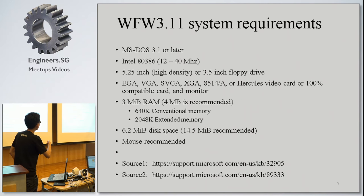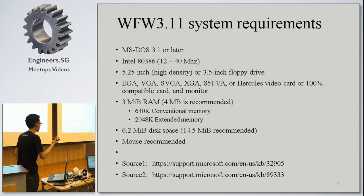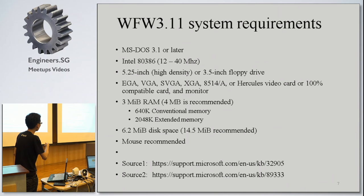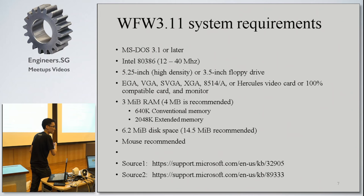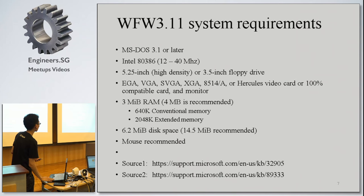Looking at the system requirements: Microsoft says you need MS-DOS 3.1 or later, a 386 CPU at 12 to 40 MHz, a 3.5-inch floppy drive — the install media comes on many diskettes. RAM minimum is 3 MB — compare that to Windows 10's 1 GB. It's split into 640 KB conventional and 2 MB extended. Disk space is only 6.2 MB, and a mouse is recommended.